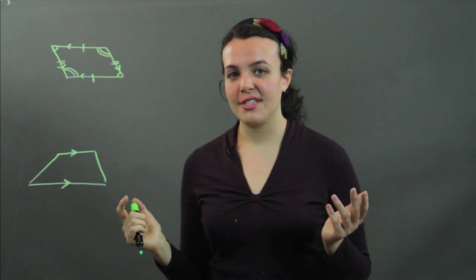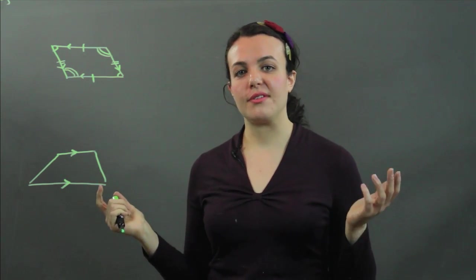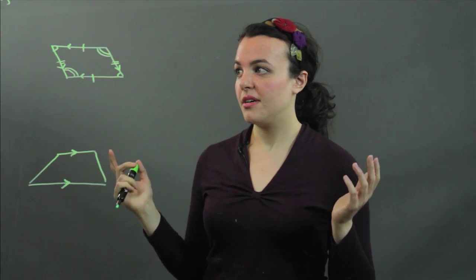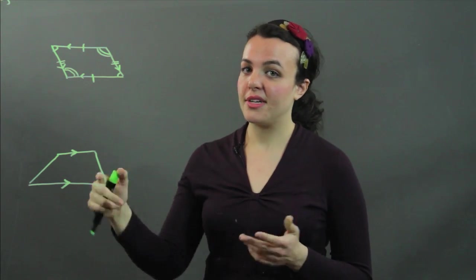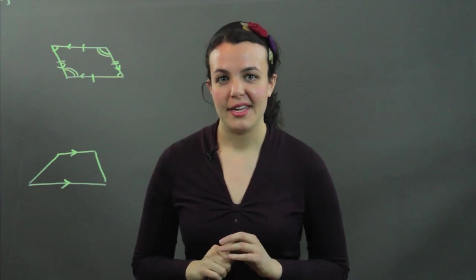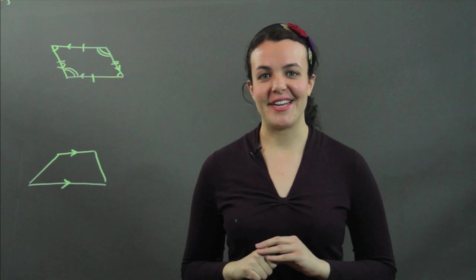So their shared characteristics: they're both quadrilaterals having four sides, four vertices, and they both at least have one pair of parallel sides. And there you go. I'm Julia. Thank you.